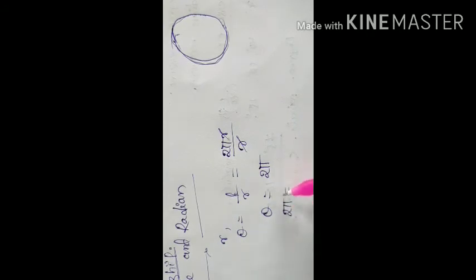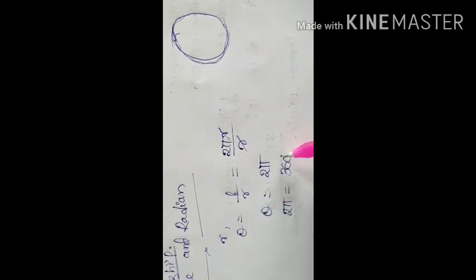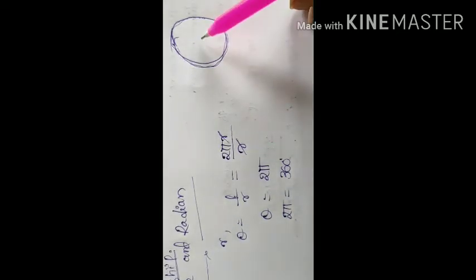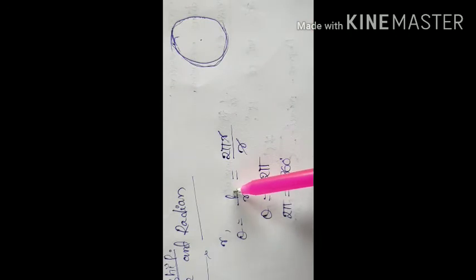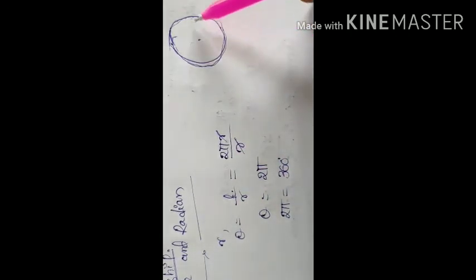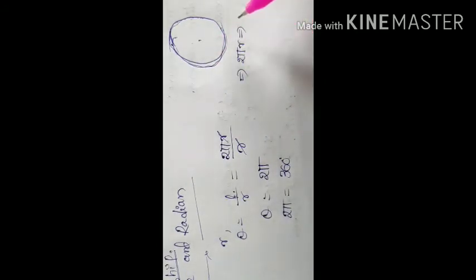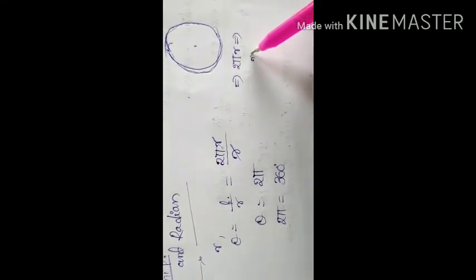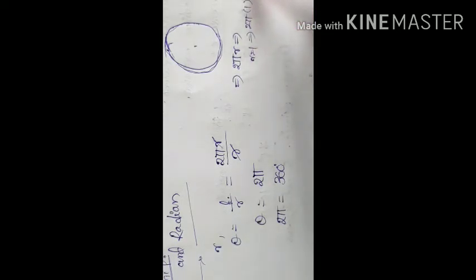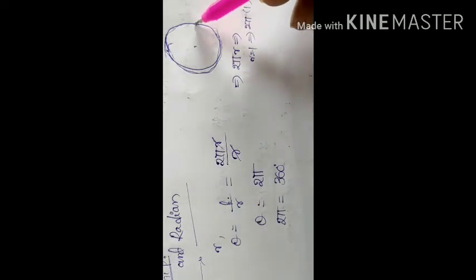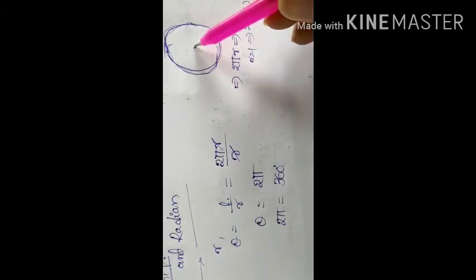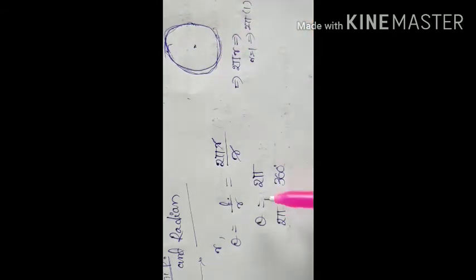Since 2π = 360 degrees, we get π = 180 degrees. If the radius is 1 unit, the circumference is 2π, meaning one complete revolution is 2π radians = 360 degrees. Therefore, 1 radian = 180/π degrees, and 1 degree = π/180 radians.